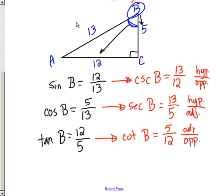So those are the six basic trigonometric functions: sine, cosine, tangent, and then their reciprocals — cosecant, secant, and cotangent — and how they work on a right triangle. If you know the three sides of a right triangle, you can find the sine, cosine, and tangent of either non-right angle, and from those you can also get the three reciprocal functions. That's all for now, thanks.